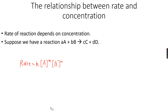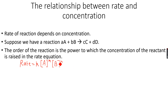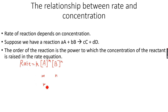M and N are not necessarily A and B respectively. M and N are known as the order of reaction. The order of reaction is the power to which the concentration of the reactant is raised in the rate equation — the concentration of A is raised to the power of M and the concentration of B is raised to the power of N. The order with respect to A is M, with respect to B is N, and the overall order of the reaction is M plus N.